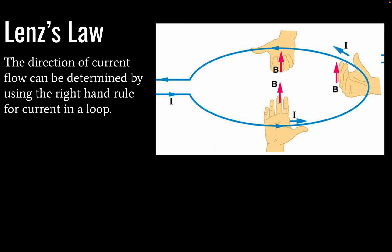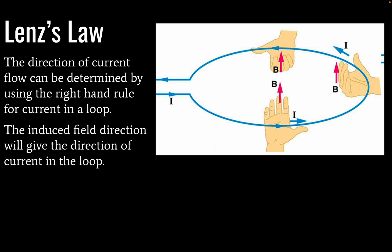Direction of current through the loop can be determined by using the right hand rule for current in a loop. And this is just the same as the right hand rule for current through a wire. So if you use the right hand rule for current through a wire, what you're going to find is that the magnetic field is the same direction through the loop no matter where you put your hand.